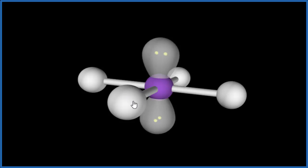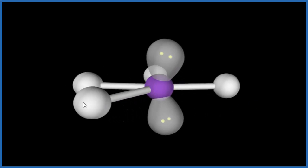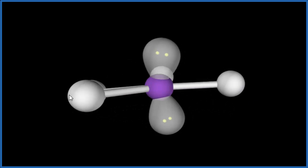We have electronegativity difference between the chlorine and the xenon, each one of these. But, they're all in opposite directions. So, they cancel out. Net dipole is zero.